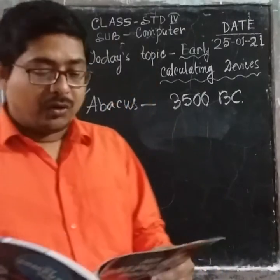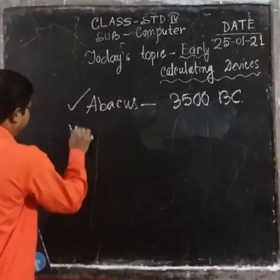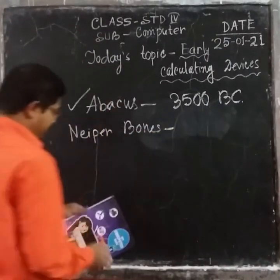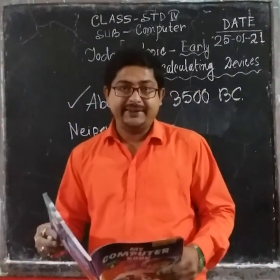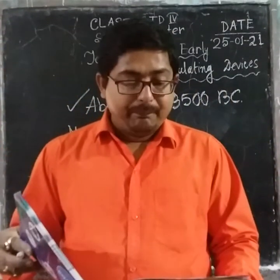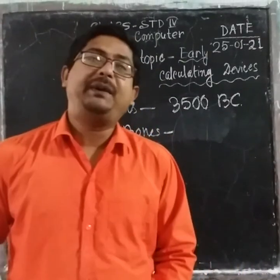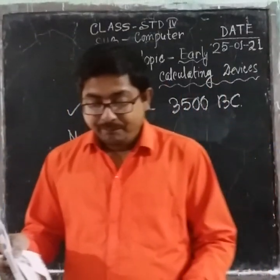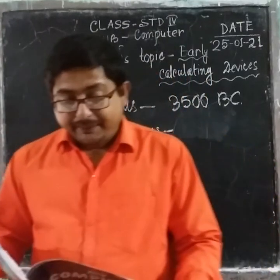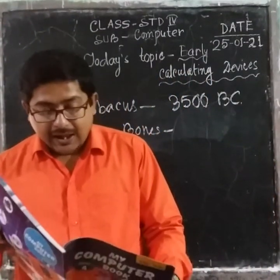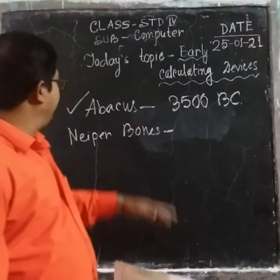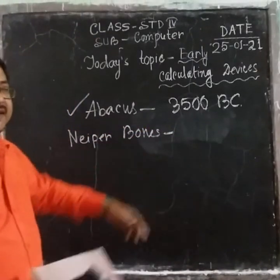The next calculating device is Napier's Bones — N-A-P-I-E-R B-O-N-E-S. In 1617, shortly before his death, Napier developed a mechanical method for performing multiplication, division, addition, and subtraction. This method is based on mathematics and is known as Napier's Bones.